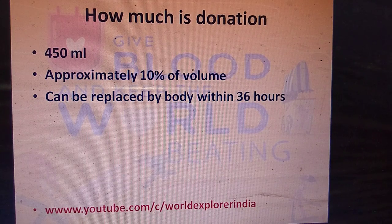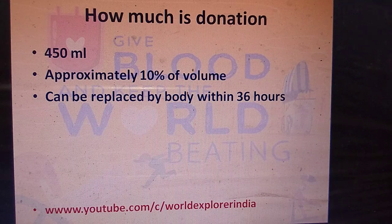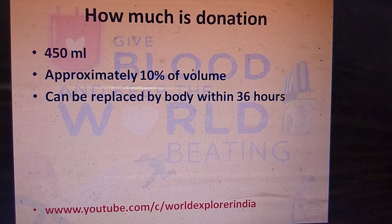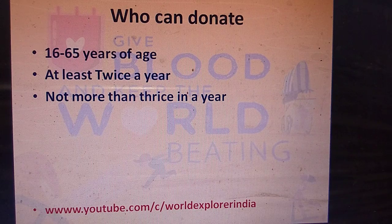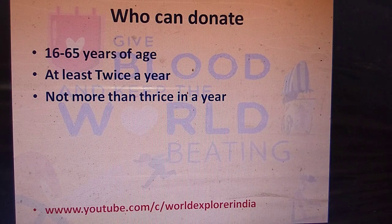Usually in every blood donation, approximately 450 ml of blood is donated, which is approximately 10% of the total blood volume, assuming five liters in an adult human body. The donated blood is replaced by the body within 36 hours. Any person in the age group of 16 to 65 years can donate blood at least twice a year, but not more than thrice.